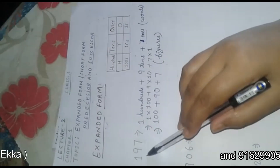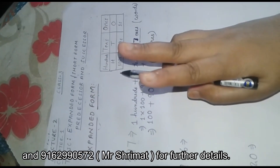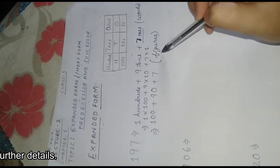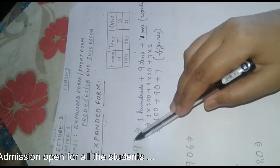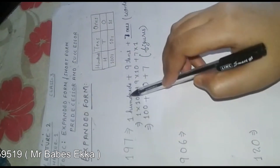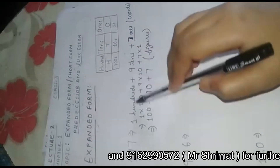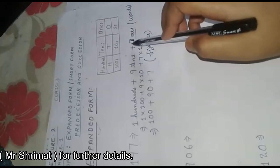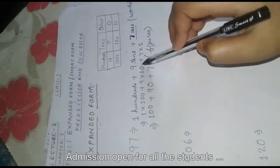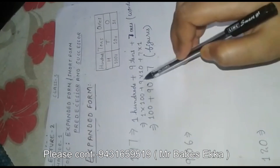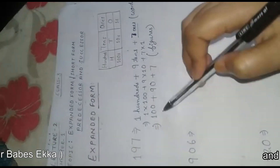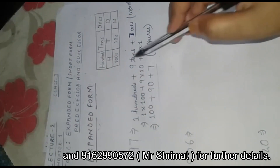While writing the digits in expanded form, we always write from left to right. If we have to write 197 in expanded form, there are two ways: first is in words and second is in figures. In words: one hundred plus nine tens plus seven ones. In figures: 1 into 100 plus 9 into 10 plus 7 into 1, which gives us 100 plus 90 plus 7. So there are two ways of writing expanded form.